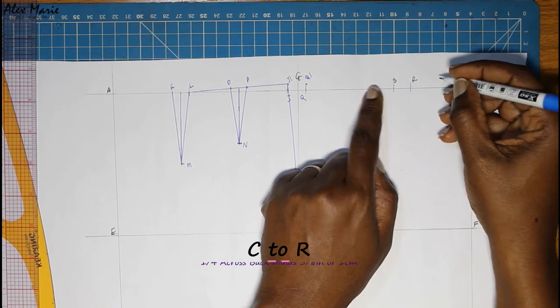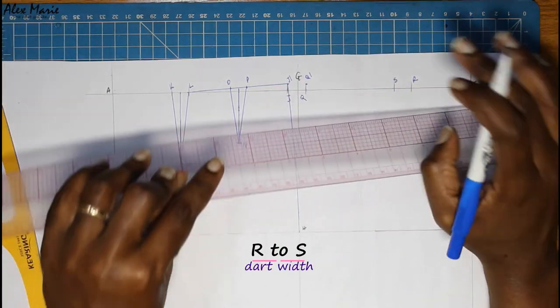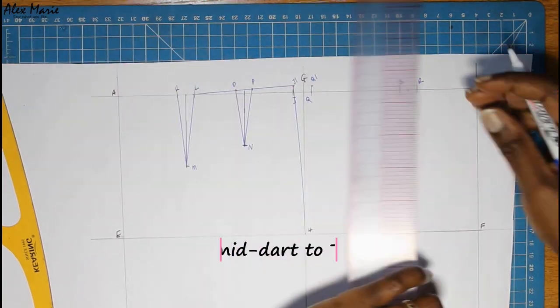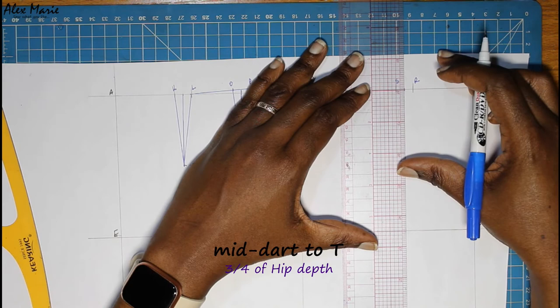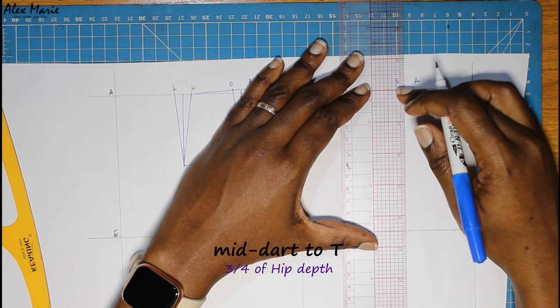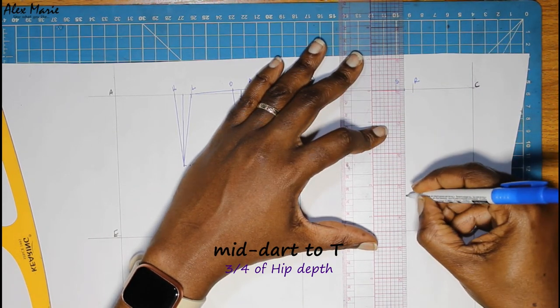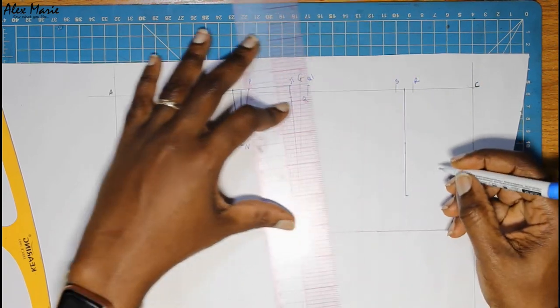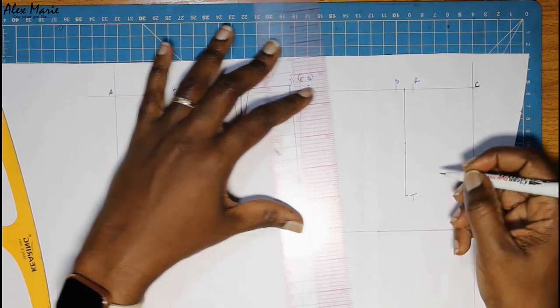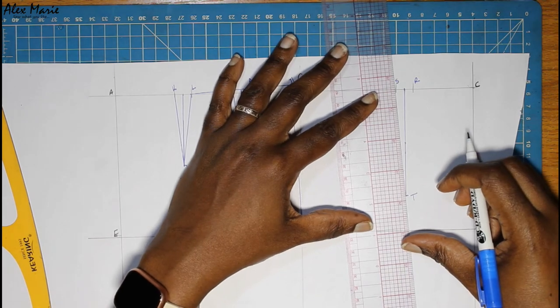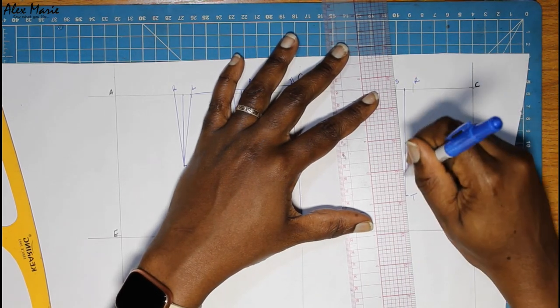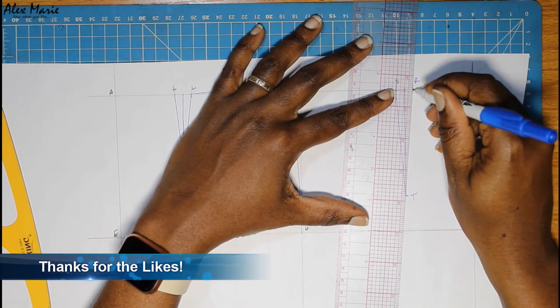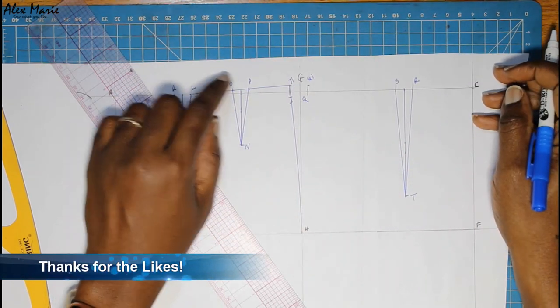Find the midpoint, square down three-quarters of your hip depth for the first dart, and connect.